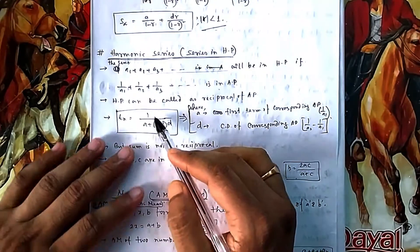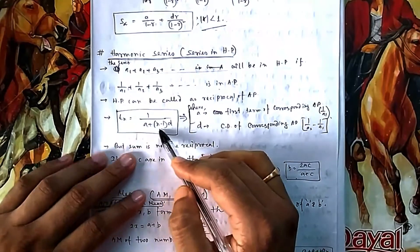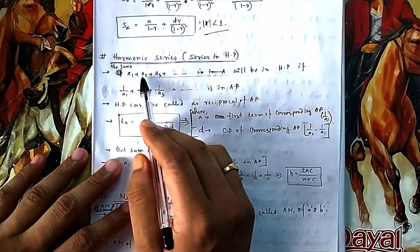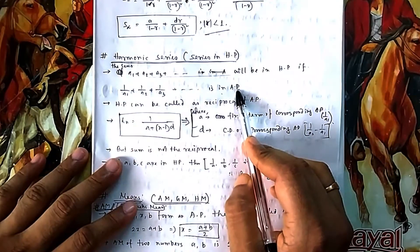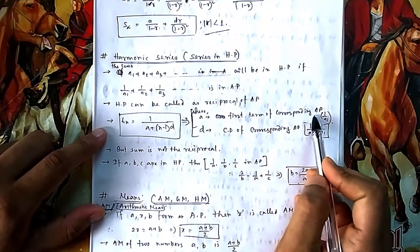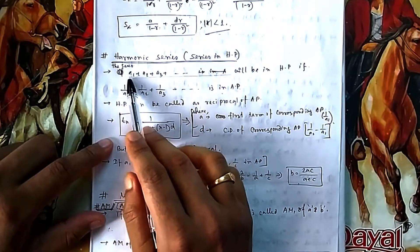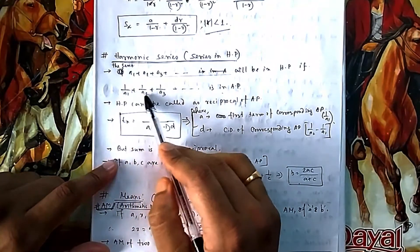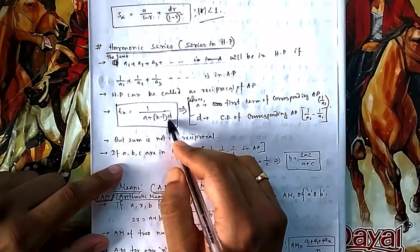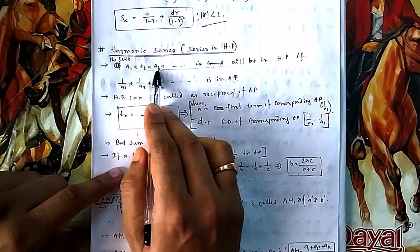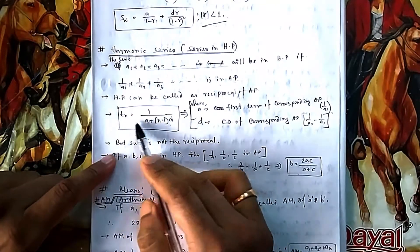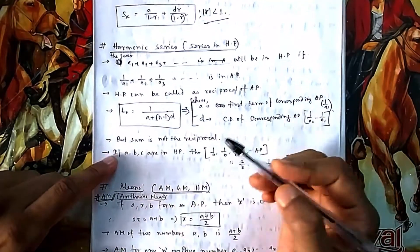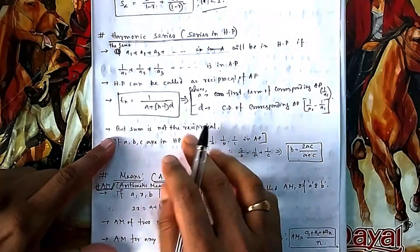The nth term formula for HP is: Tₙ = 1 / (a + (n−1)d), where a and d are the first term and common difference of the corresponding AP, not of the HP itself. The first term of the AP is the reciprocal of the first term of the HP, and the common difference is the difference between consecutive AP terms. You apply the AP formula and then take the reciprocal to get the HP term. However, you cannot take the reciprocal of the sum.